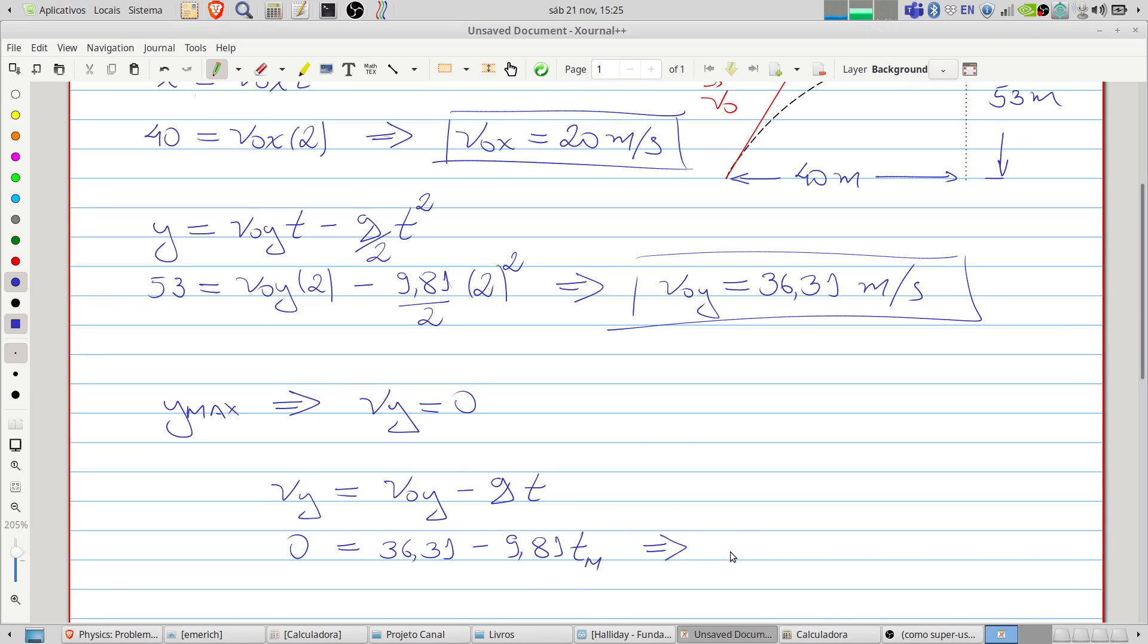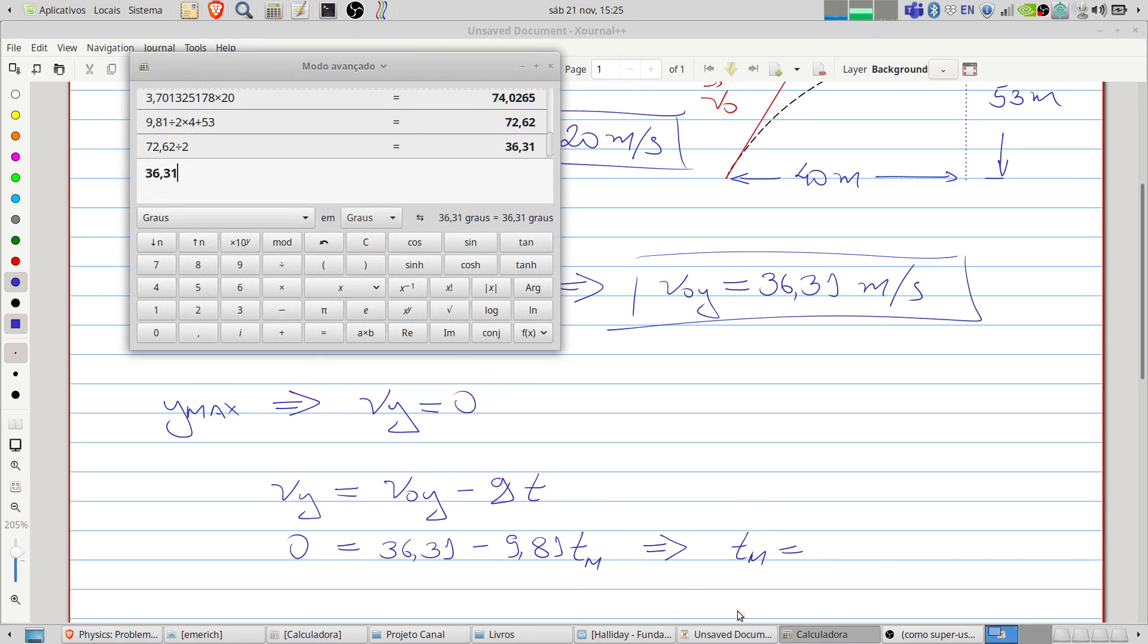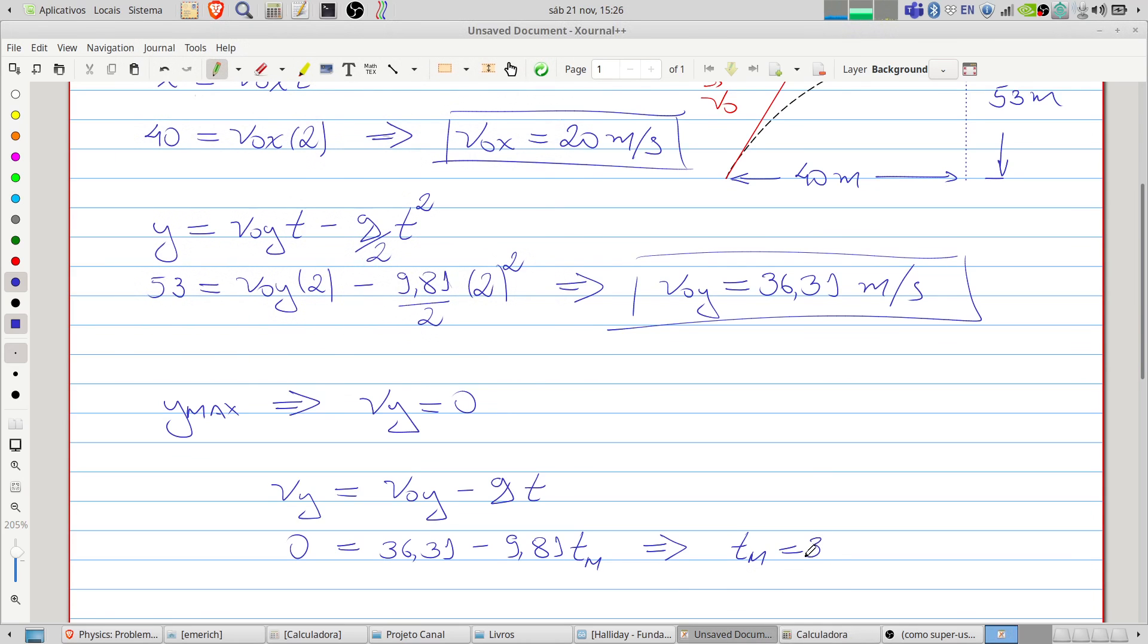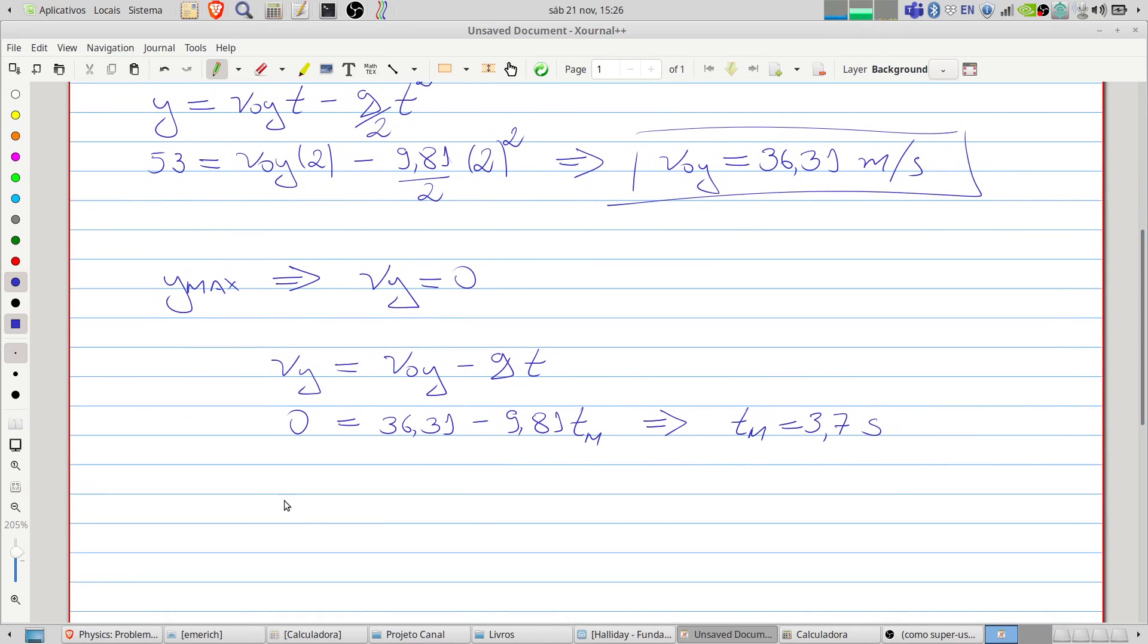The time of maximum height will be 36.31 divided by 9.81, so 3.7 seconds. And what we want is the x displacement.